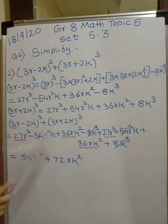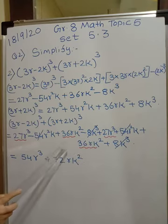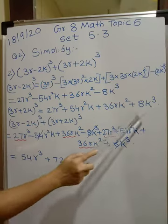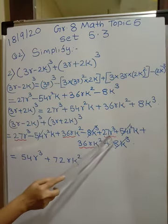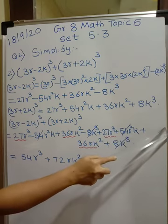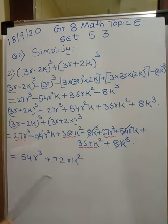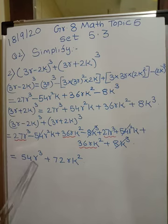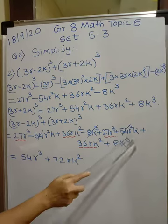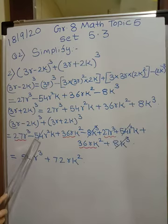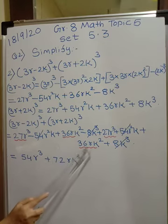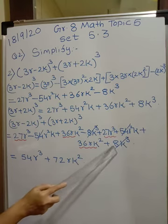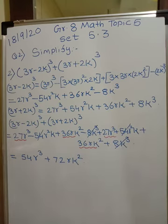For (3r + 2k)³, since it is (a + b)³, all signs are plus: 27r³ + 54r²k + 36rk² + 8k³. Now adding the two expansions: 27r³ + 27r³ = 54r³; -54r²k + 54r²k cancels; 36rk² + 36rk² = 72rk²; -8k³ + 8k³ cancels. So the answer is 54r³ + 72rk².